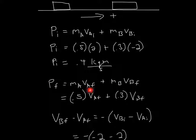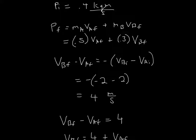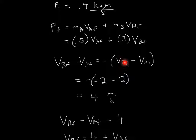For the final momentum, it's equal to the same equation except the velocities are the final velocities. We'll plug in what we know — the masses are 0.5 and 0.3. We know that the final velocity of the gliders, when you subtract them, is equal to the negative of the initial velocities when you subtract them. So the velocity of B is negative 2, minus the velocity of A which is positive 2, so negative 2 minus 2 is negative 4, and then negative times negative is positive 4 meters per second.